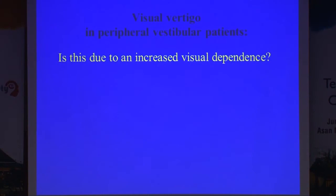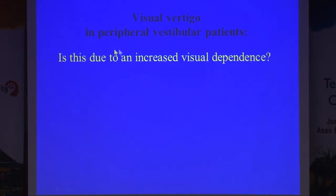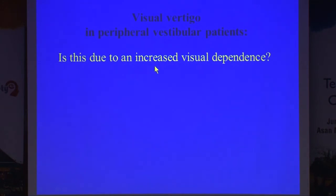So why does visual vertigo appear in a vestibular population? Perhaps it's that some people with increased visual dependency to start with, when they get a vestibular disorder, become vestibular patients with an additional visual dependency — one on top of each other, which is a bad recipe.